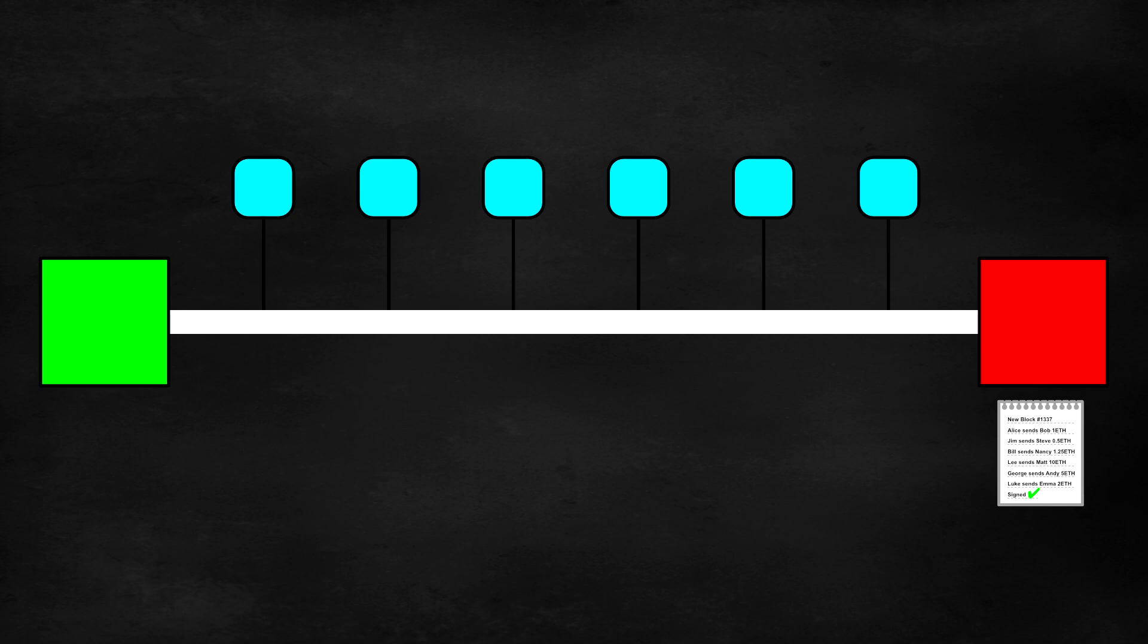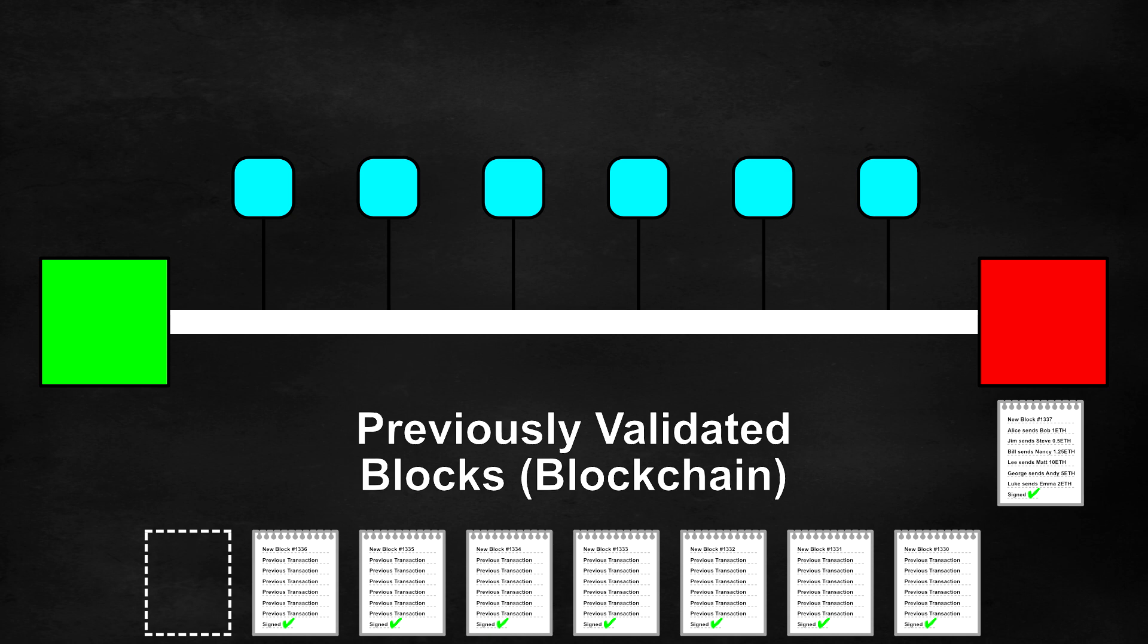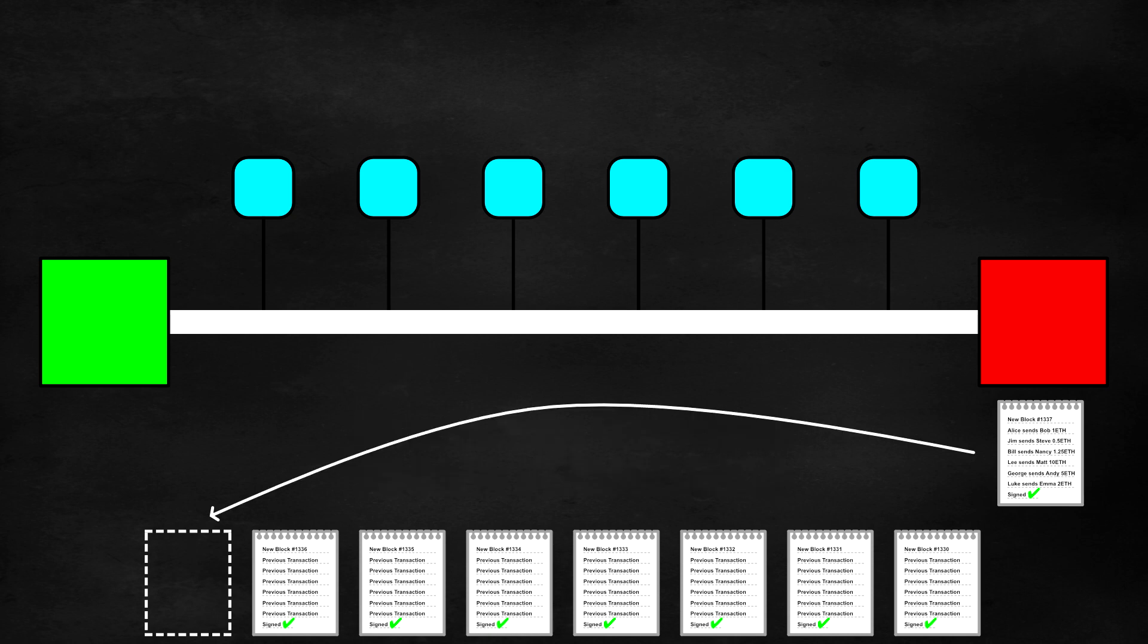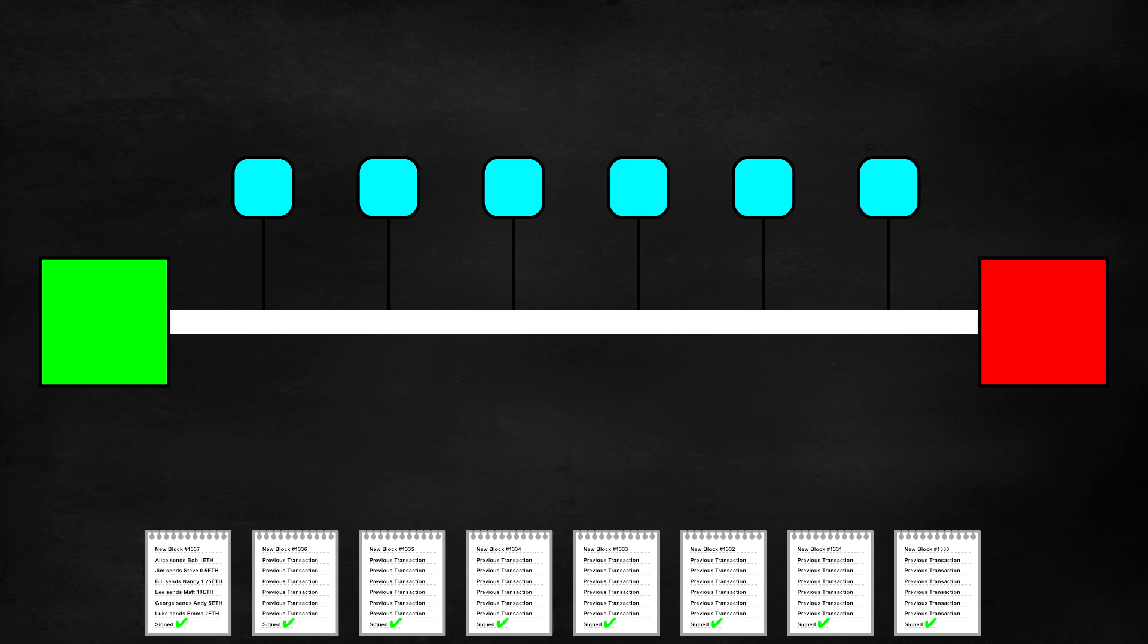The miner or validator reviews the transactions and confirms that they are valid. For example, they confirm that nobody is trying to double spend their balance. Once the transactions in a block have been validated, they can be added to the blockchain.